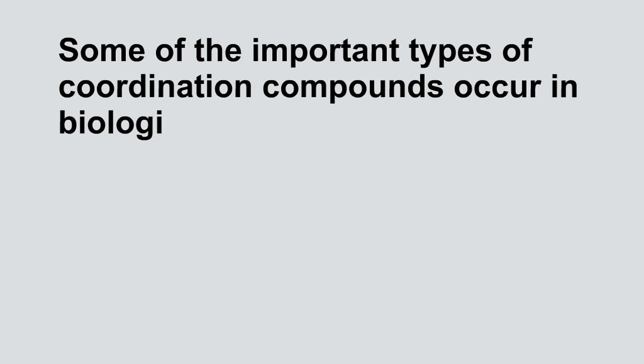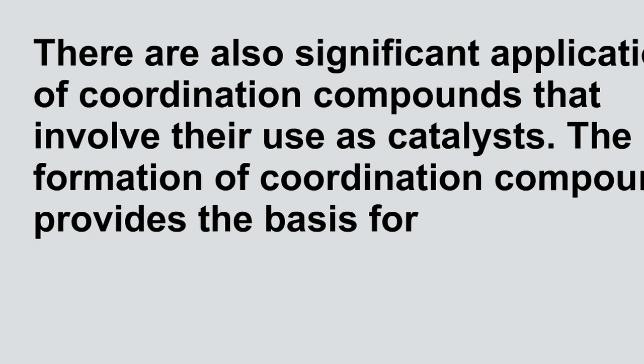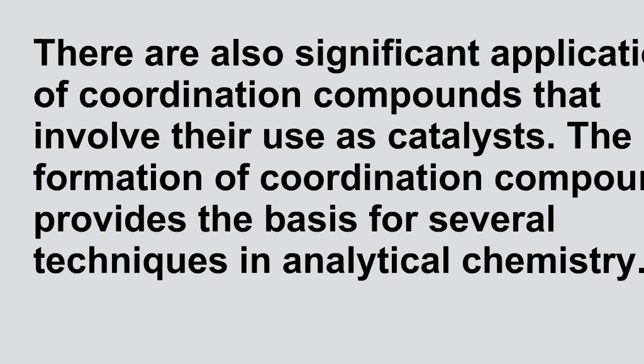So why do we study it? What's the benefits? Some of the important types of coordination compounds occur in biological systems, for example, heme and chlorophyll. There are also significant applications of coordination compounds that involve their use as catalysts. The formation of coordination compounds provides the basis for several techniques in analytical chemistry.